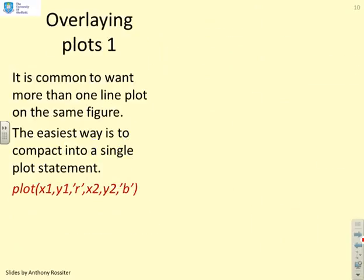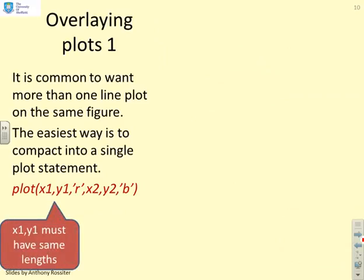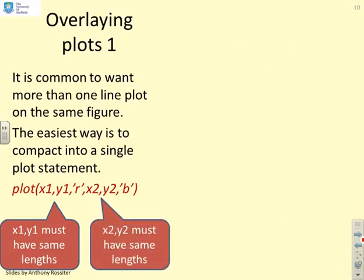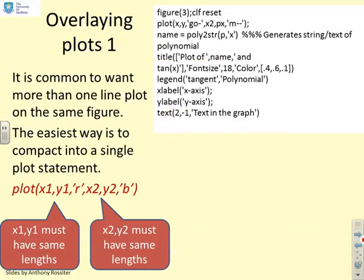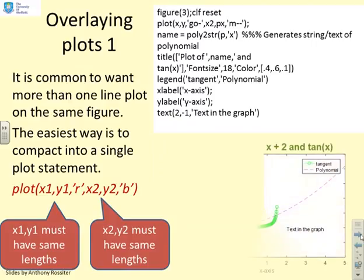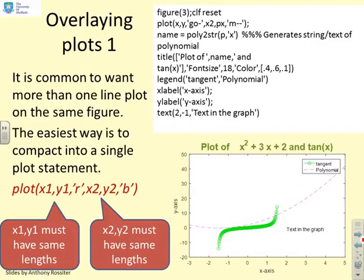It's common to want more than one line plot on the same figure. The easiest way is to compact everything into a single plot statement. For example: plot(x1, y1, 'r', x2, y2, 'b') — x1 and y1 must have the same length, and then x2 and y2 are added to the same command. This single plot statement produces two line plots. In this example, I've plotted x against y in green circles — the tangent curve — and x2 against px in magenta, which is the polynomial from the previous example.